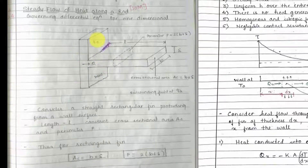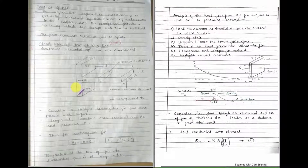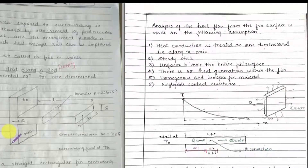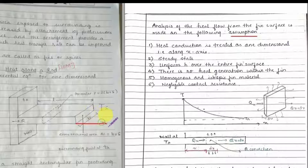Now we will find the temperature distribution equation first, because for designing the fin, the temperature distribution along the fin should be very much clear to us. Before going to the derivation, there are some assumptions that we make. The first assumption is that the heat is conducted in one dimension only — we are taking this as a one-dimensional problem, in particular the x direction.